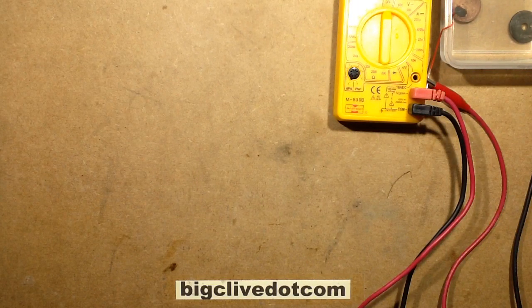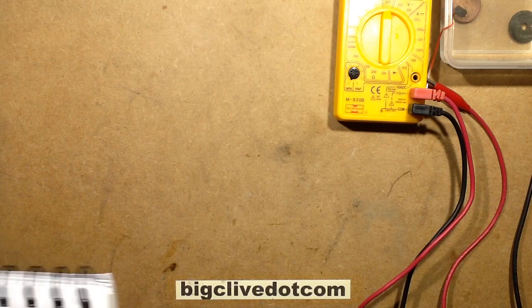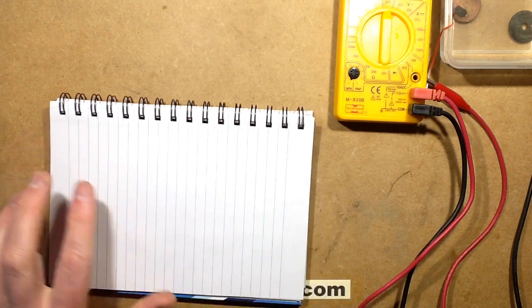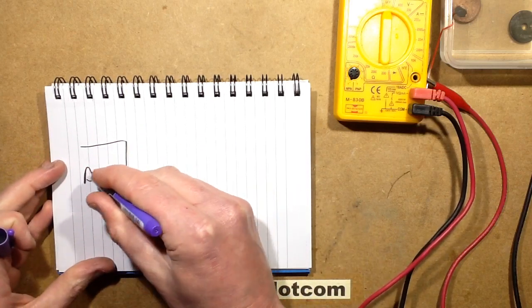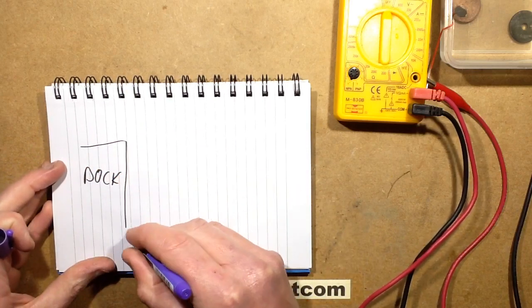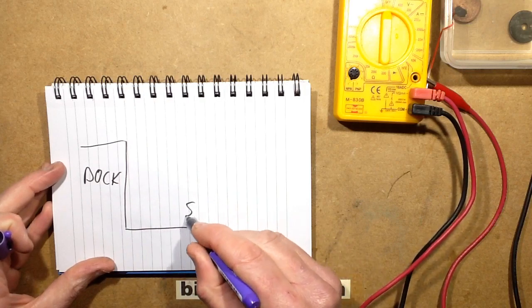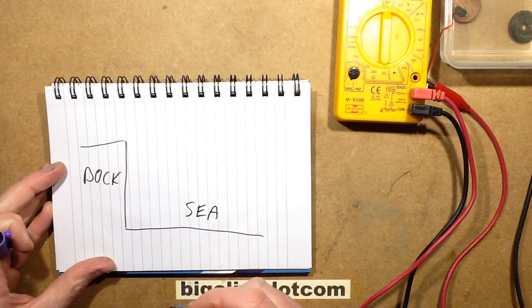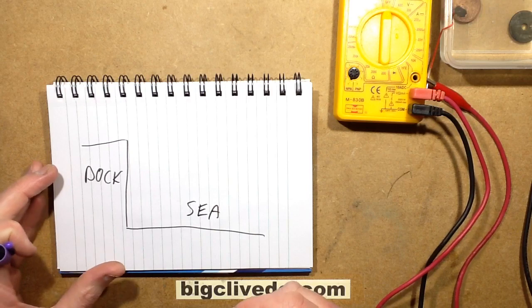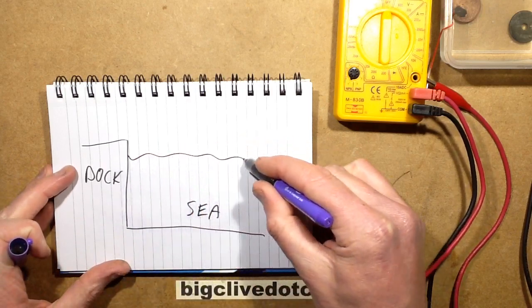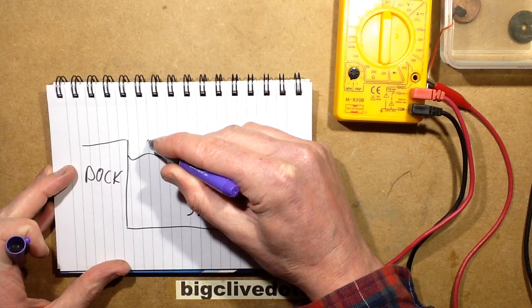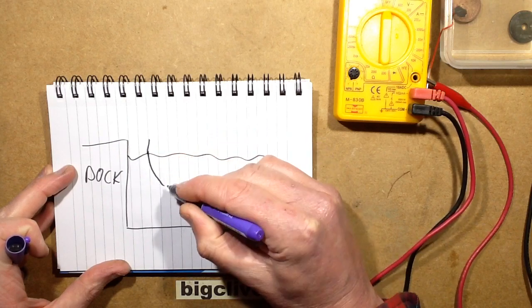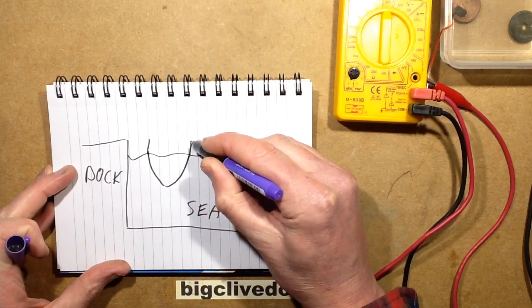So let's imagine a much larger container of salt. Here's a dock, here's a sea which is a very large container of salty water, and it's lapping up there. Then you've got a boat with its hull under the water and its hull is generally made of steel.